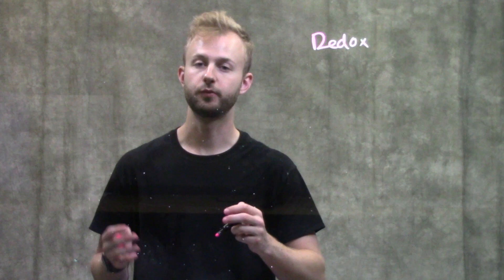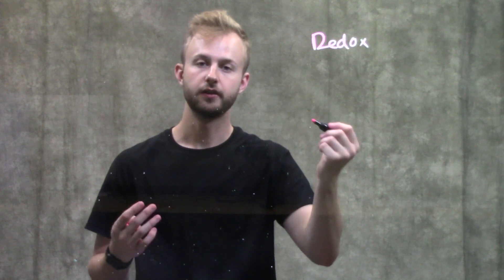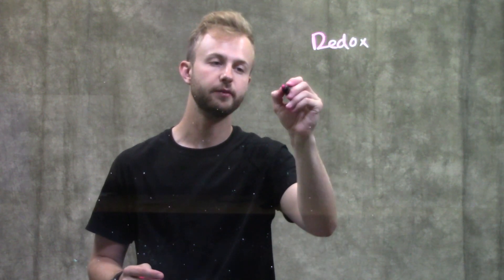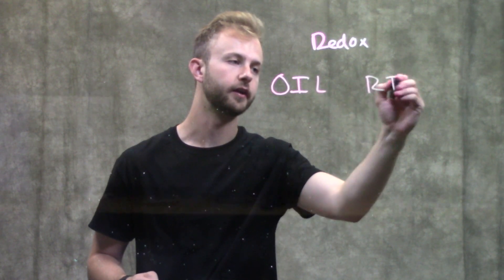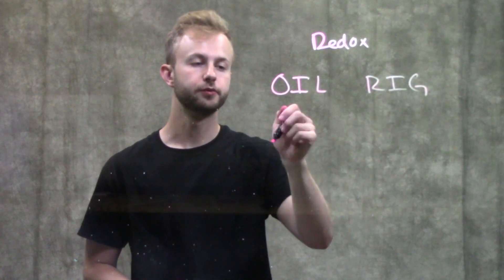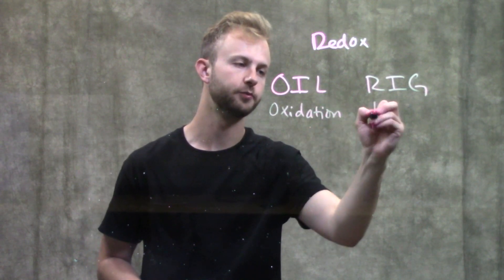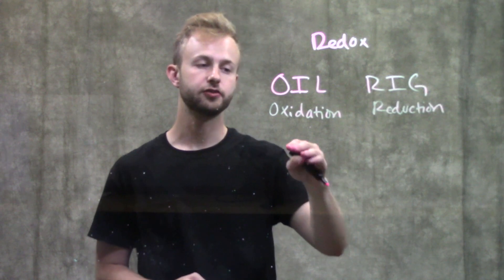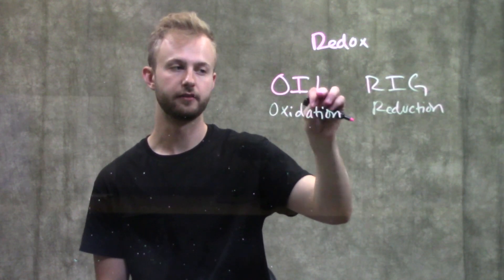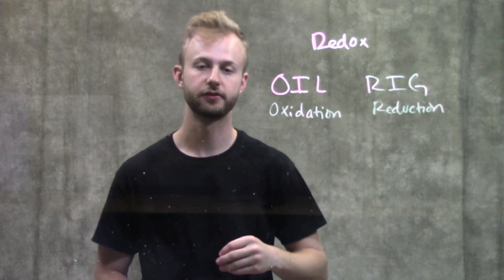We have oxidation and reduction. With oxidation, you're losing electrons. A really easy way to remember this is OIL RIG. This one is for oxidation and this one is for reduction. OIL RIG helps because oxidation is loss, so it loses electrons. Reduction is gain, so you're gaining electrons.